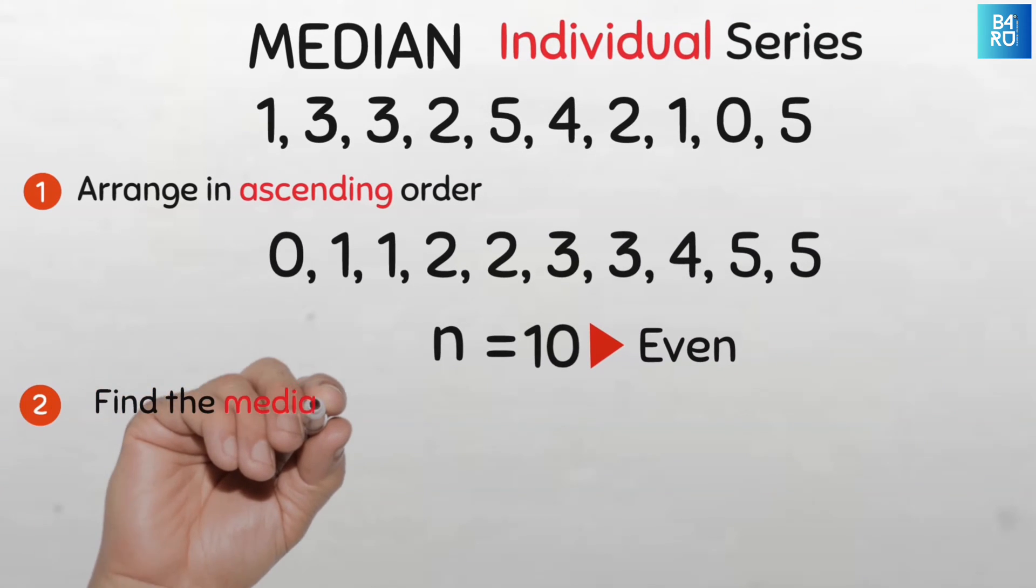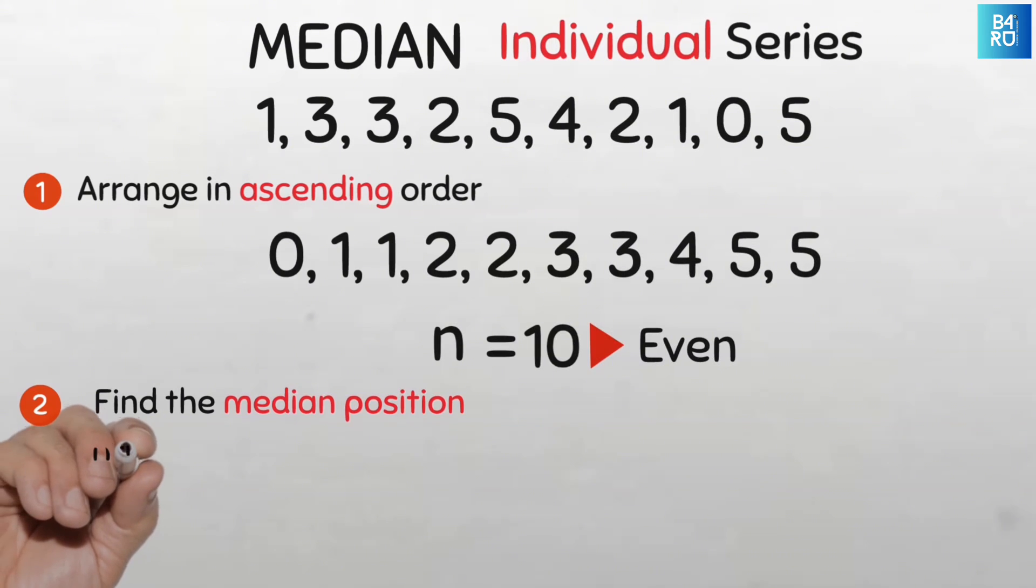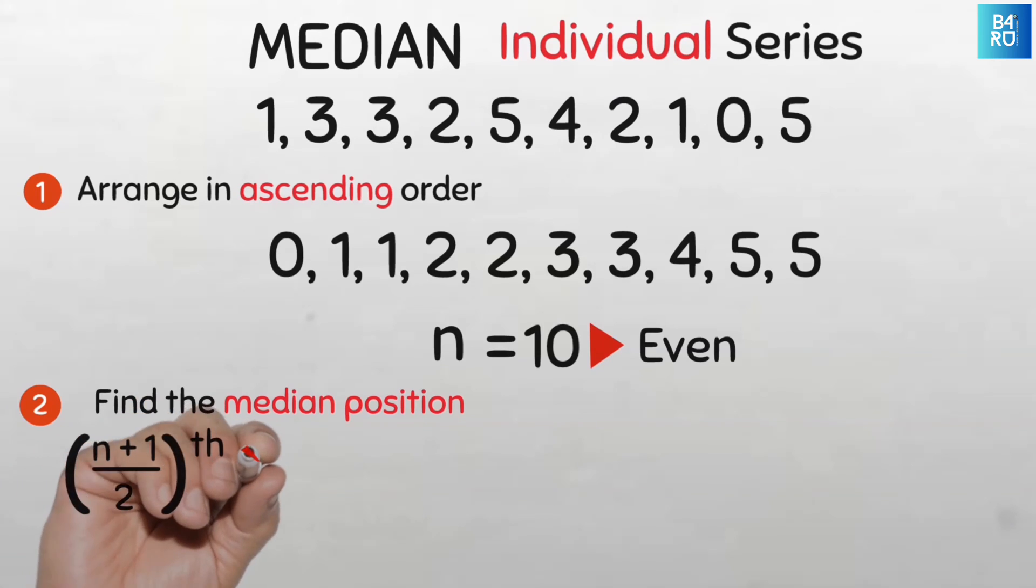To find the position of the median value we will use the simple formula that says the median position is (n+1) divided by 2. Notice that there is a 'th' here. This means that whatever we find is the position of the median, not the median itself.